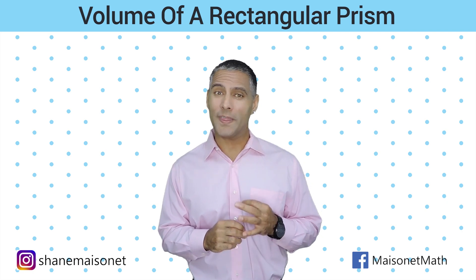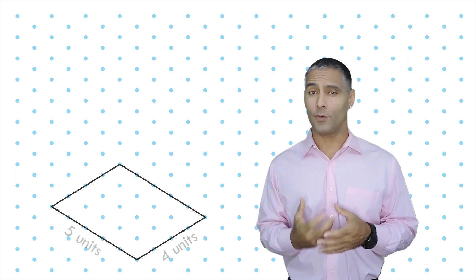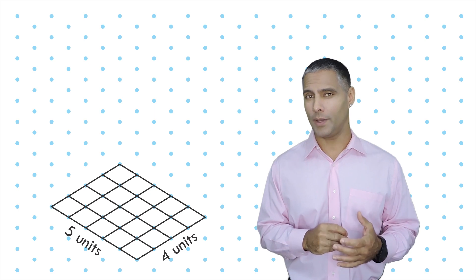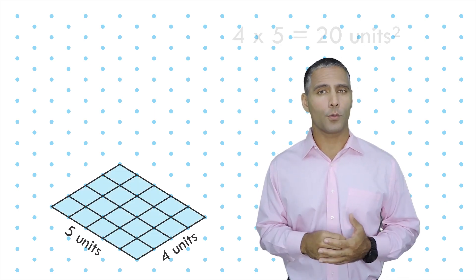So we're going to start with the base of a rectangular prism, which is just a rectangle. This rectangle right here is a 4 by 5 rectangle, so it would take 20 square units to cover this rectangular base. In other words, the area of this rectangle is 20 square units.